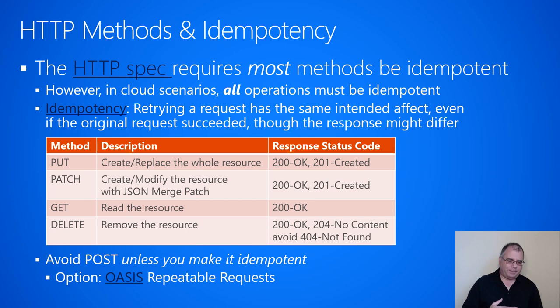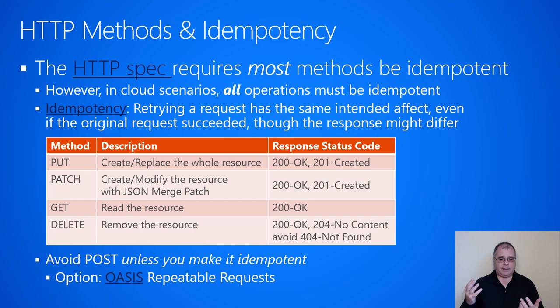Now let's talk about PATCH. PATCH is really the same thing — it lets you create or modify the resource, and we highly recommend using it with JSON merge patch, which is what makes PATCH idempotent. If you're using PATCH to create a resource, you return a 201. If you're using PATCH to modify an existing resource, you return a 200 OK. Again, the 201 is advisory because a client may never actually see it if there's a timeout or some other failure and it just retries the operation.